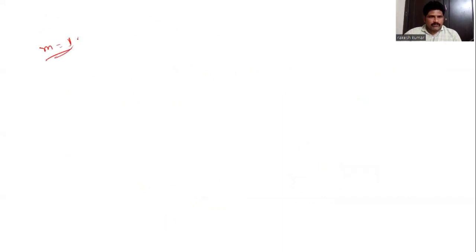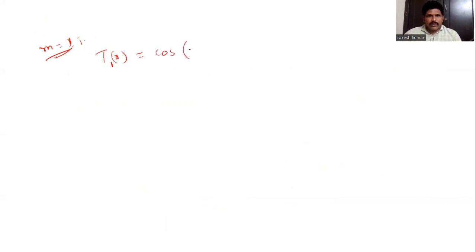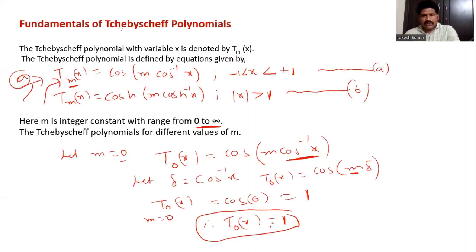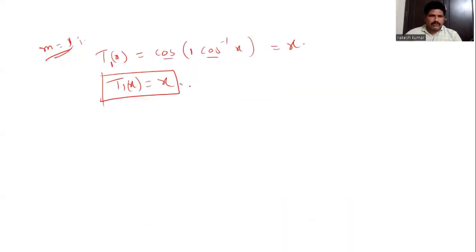Now for m = 1: T1(x) = cos(1 · cos⁻¹(x)). Since cos(cos⁻¹(x)) = x, therefore T1(x) = x. So T0(x) = 1 and T1(x) = x.